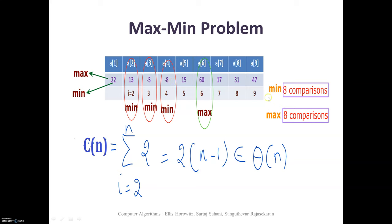To find the minimum element, 8 comparisons are made for an array containing 9 elements, and to find the maximum, another 8 comparisons are made — so 16 comparisons total, that is 2 times 8. In general, for n elements, n minus 1 comparisons are needed to find the minimum and n minus 1 to find the maximum, giving 2(n−1) total comparisons. This belongs to theta of n.